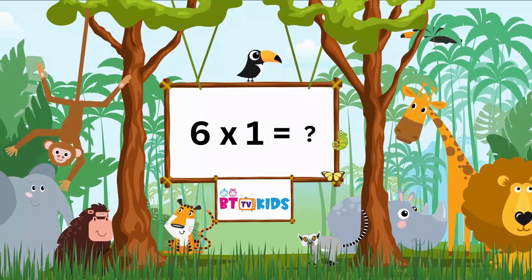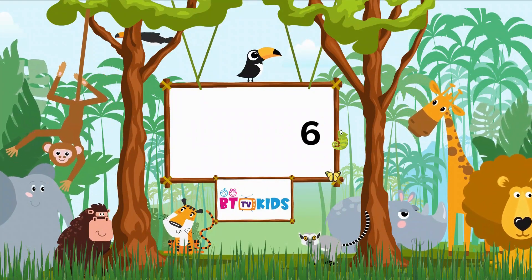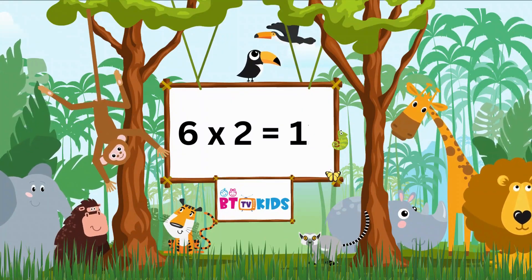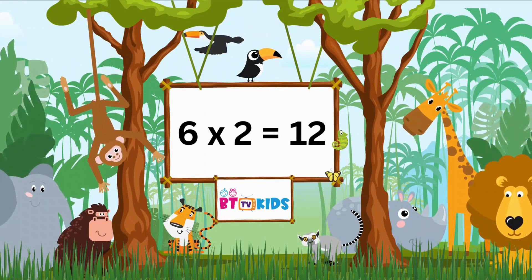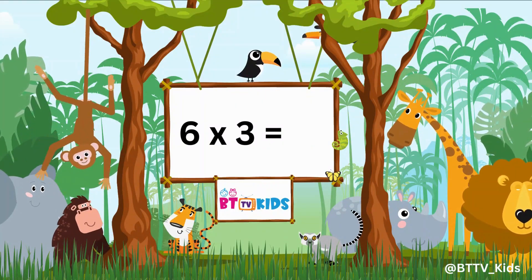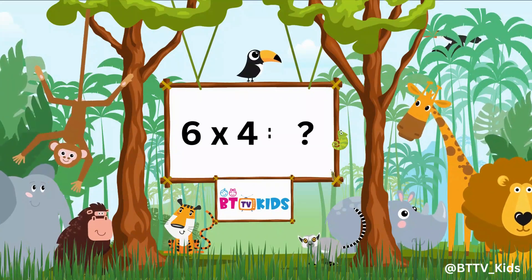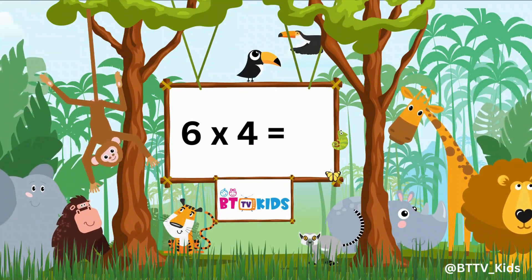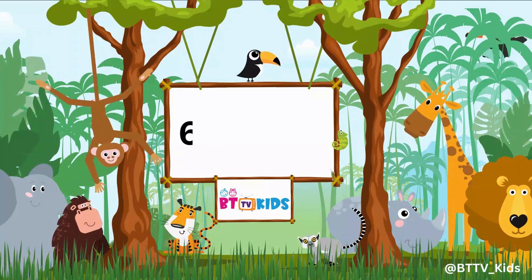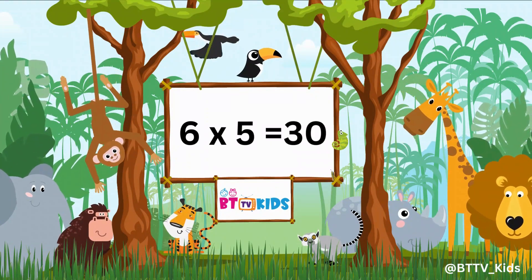Six ones are six. Six twos are twelve. Six threes are eighteen. Six fours are twenty-four. Six fives are thirty.